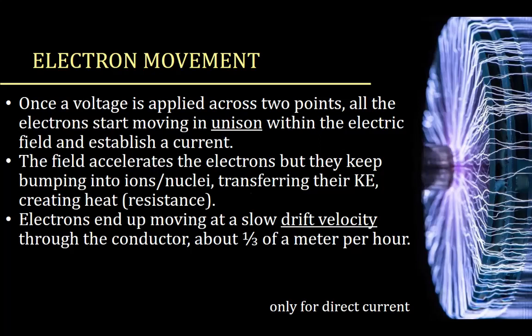Once voltage is applied across two points, all the electrons start moving at the same time within the electric field, establishing a current. The field accelerates the electrons, but they keep bumping into other ions and nuclei, transferring their kinetic energy and creating heat in the form of resistance. The electrons end up moving at a very slow drift velocity through the conductor — approximately one third of a meter per hour. It's not so much the movement speed of the electrons as the electric field that keeps the current moving. This is direct current, going in one direction.